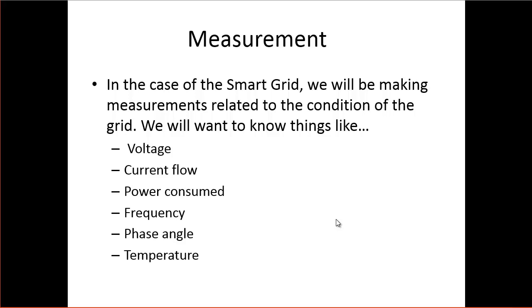So talking about the measurement portion of this, in the case of the smart grid, we're going to be making measurements related to the condition of the grid. So we're going to want to know things like the voltages in various parts of the grid. We want to know about the current flow, power flows, and power consumption. Frequency is very important. Here in the United States, we generate power at 60 hertz. So our AC power cycles at 60 times a second, and that frequency needs to be pretty stable.